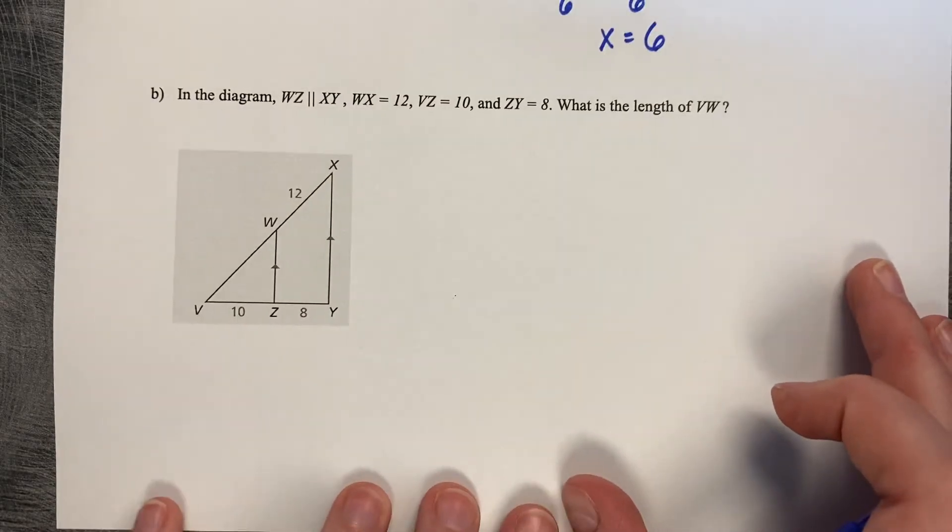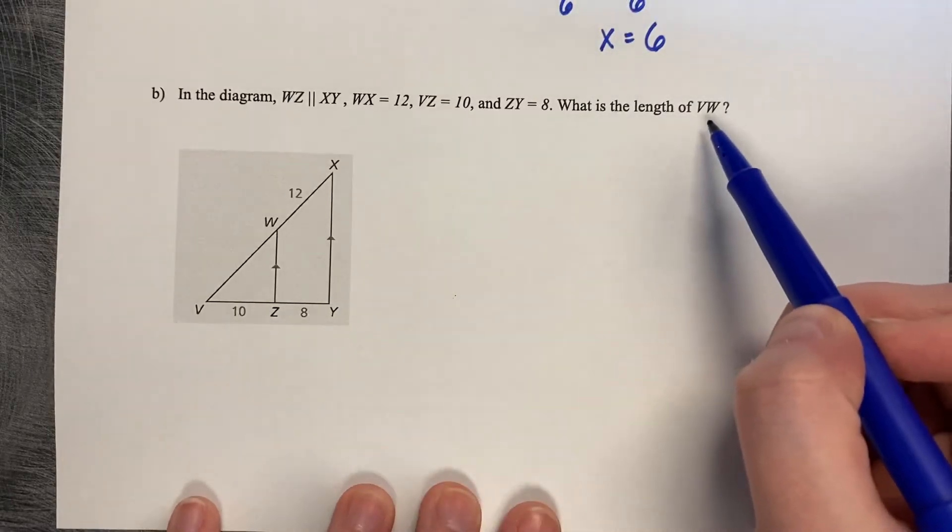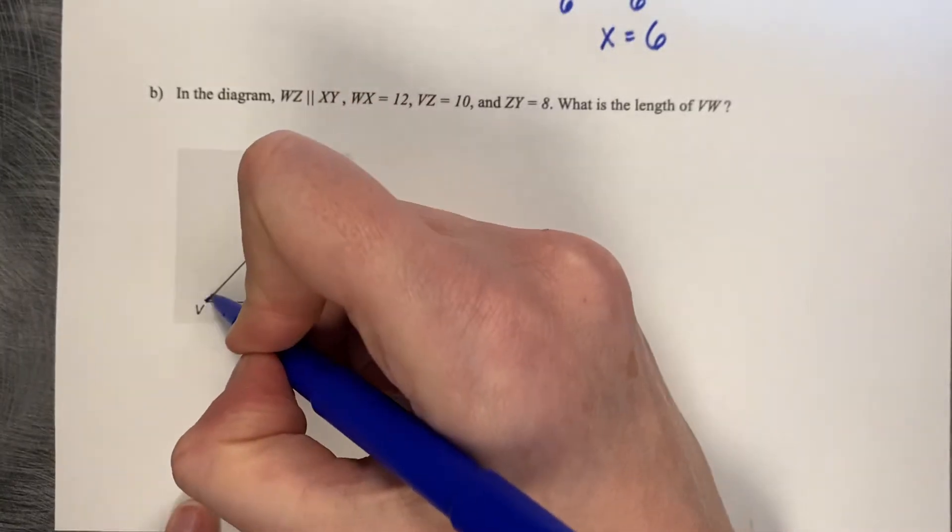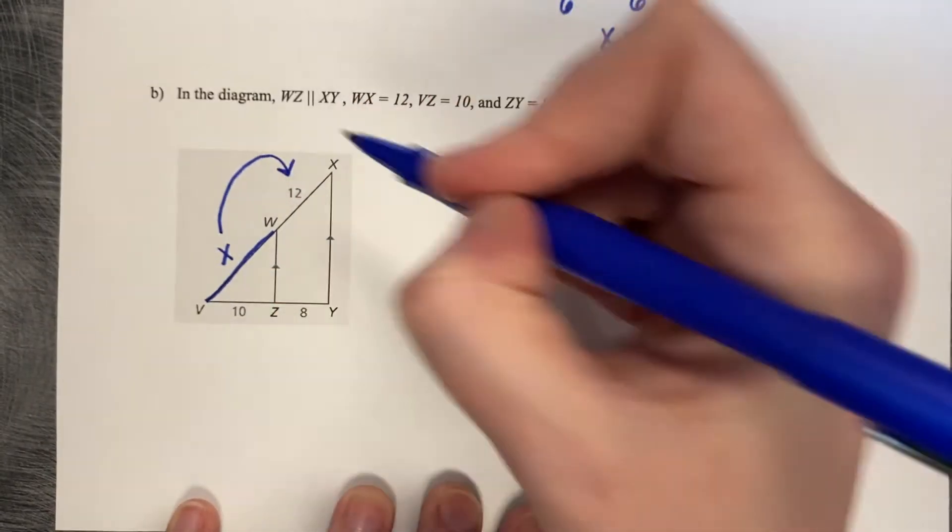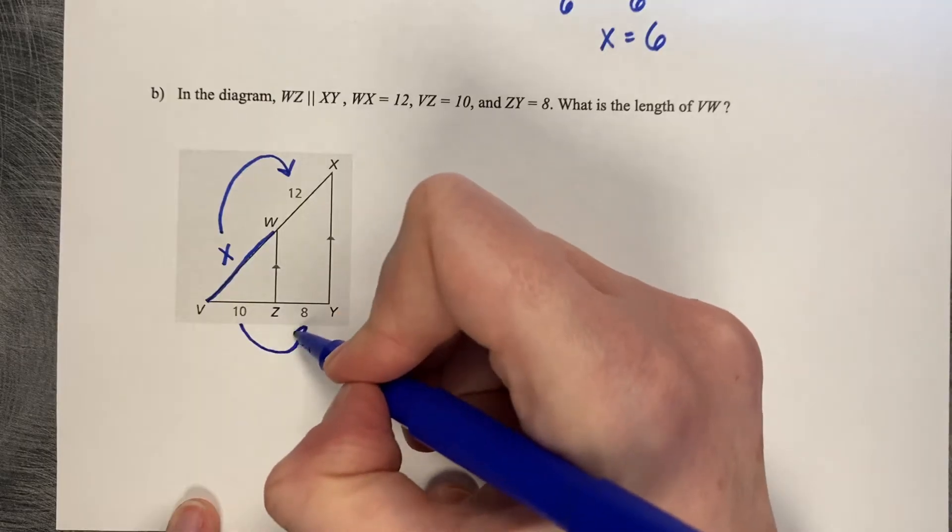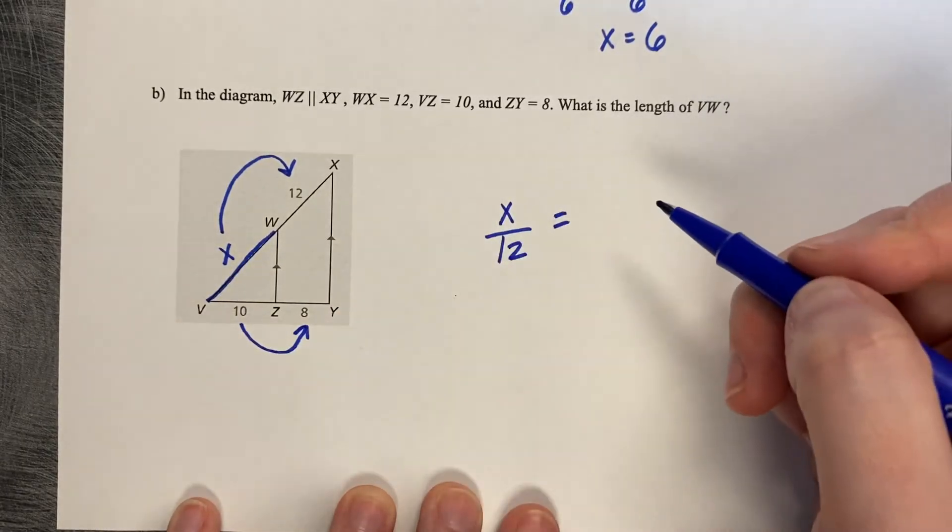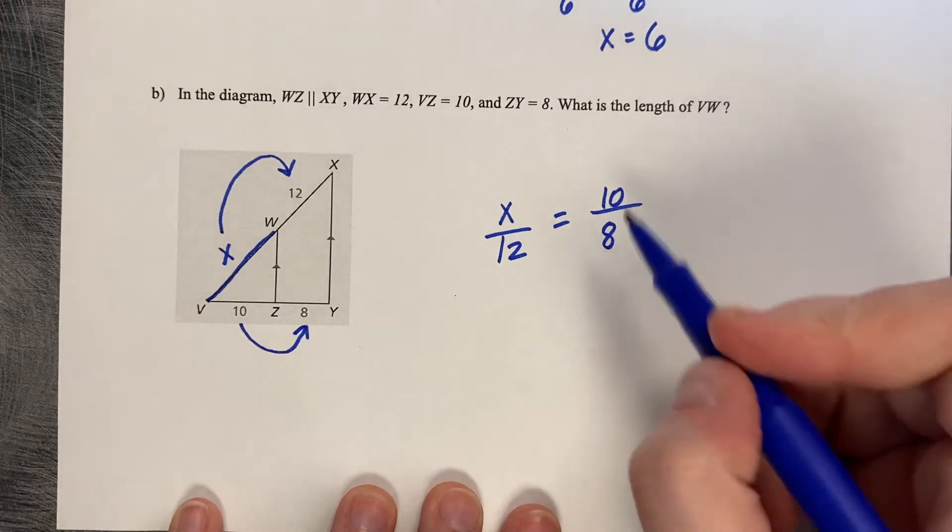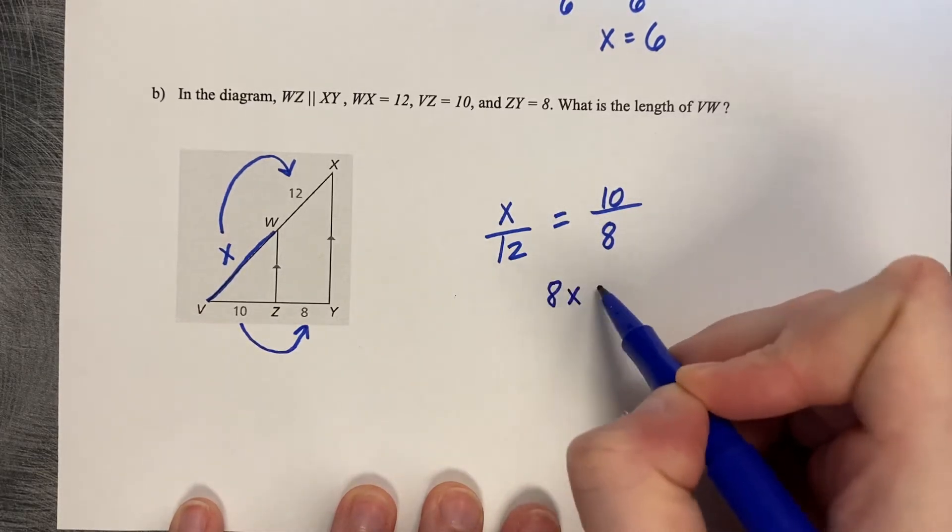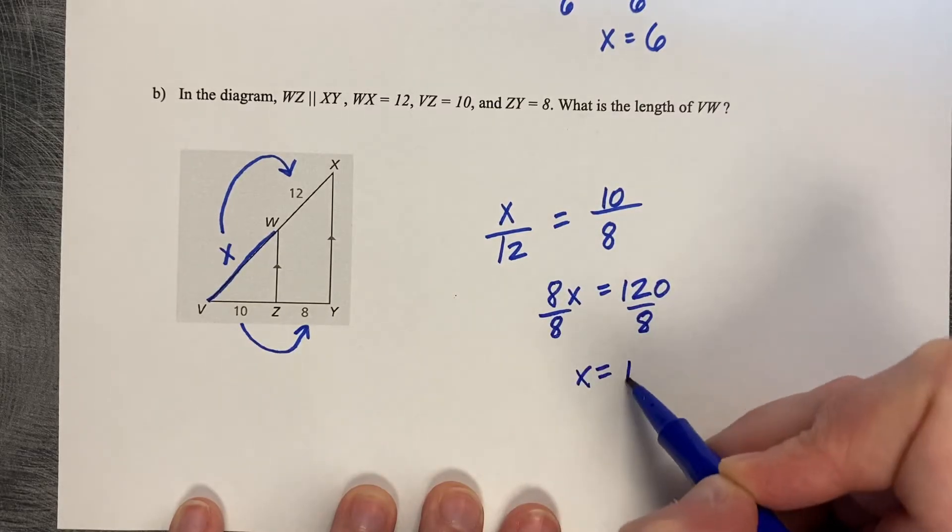Let's try another. In the diagram, they're parallel and they've labeled the important parts. What is the length of VW? So we're looking for this length right here. I'll call it X. So X compares to 12 as 10 compares to 8. So 8X equals 120. Divide by 8 and X equals 15.